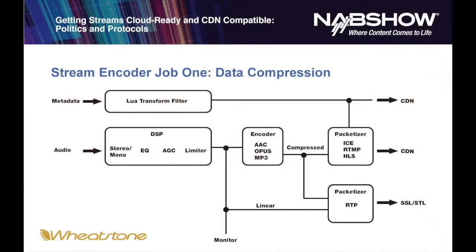Let's take a closer look at the inner workings of the stream encoder. On the left side, we have full bandwidth audio coming in. The first thing we do is run it through a digital signal processing algorithm to condition it, clean it up, and get it ready for the data compression encoder. The reason we do this is that the data has to be compressed and you have a limited number of bits to work with — the compression encoder has to spend those bits on signal that matters, not signal that doesn't matter.